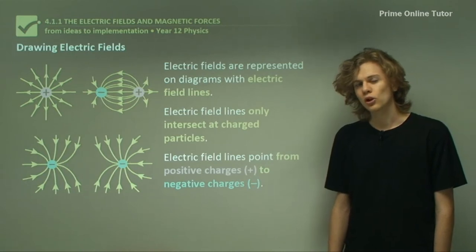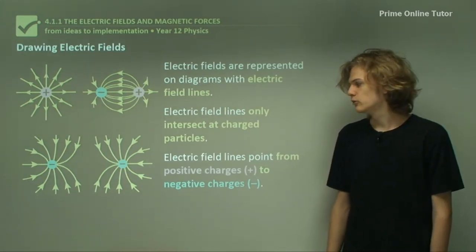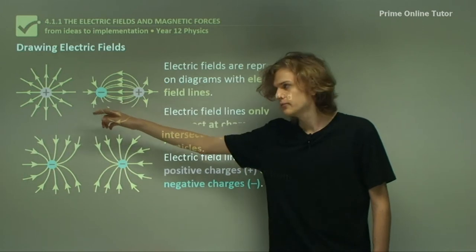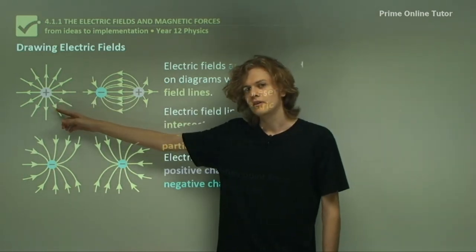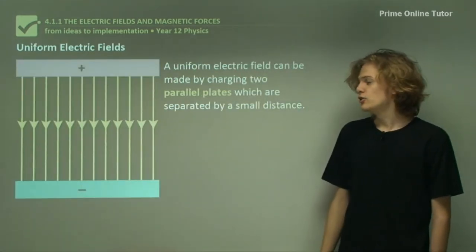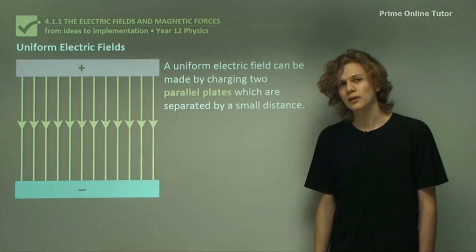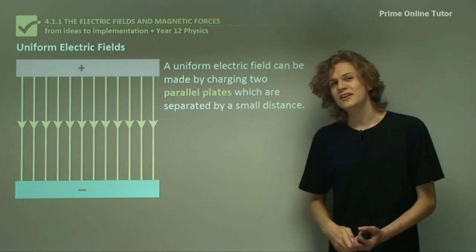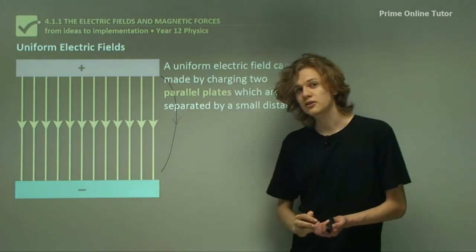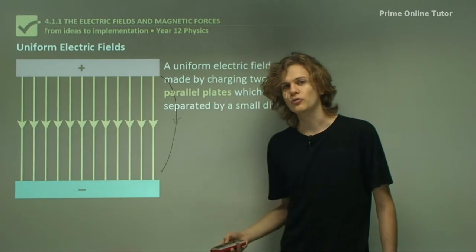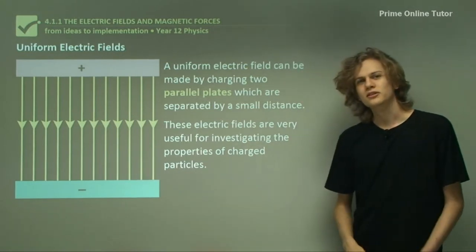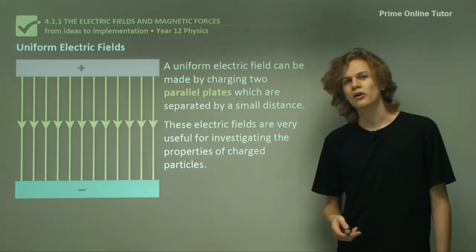While magnetic field lines move from the north pole of a magnet to the south pole of a magnet, electric field lines must move from the positive charge to the negative charge. We can see here electric field lines moving from positive to negative. If there's a single positive charge, then the electric field lines are moving outwards from it, and negative charges have electric field lines moving inwards. A uniform electric field can be created by having two parallel plates which are charged with a voltage between them. In reality, near the edges of the plates, the electric field is not quite uniform — it's a little bit curved. But so long as the plates are large enough or close enough together, we can assume that the field in the middle is uniform. Having a uniform electric field is very useful, because it means that we can study the effects of a field on charged particles without having to worry about the strength of the field.